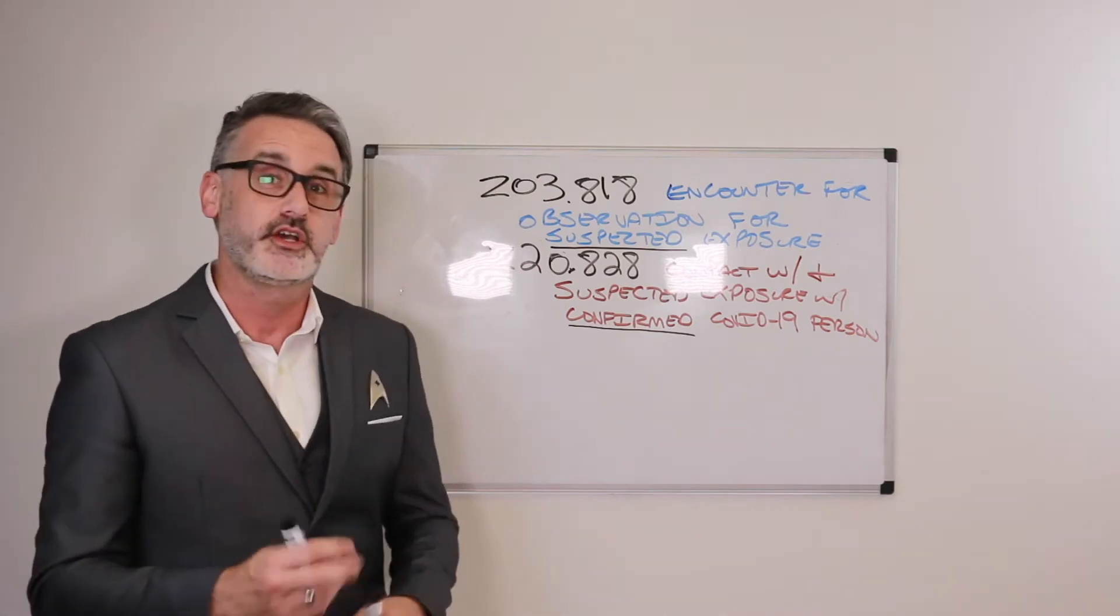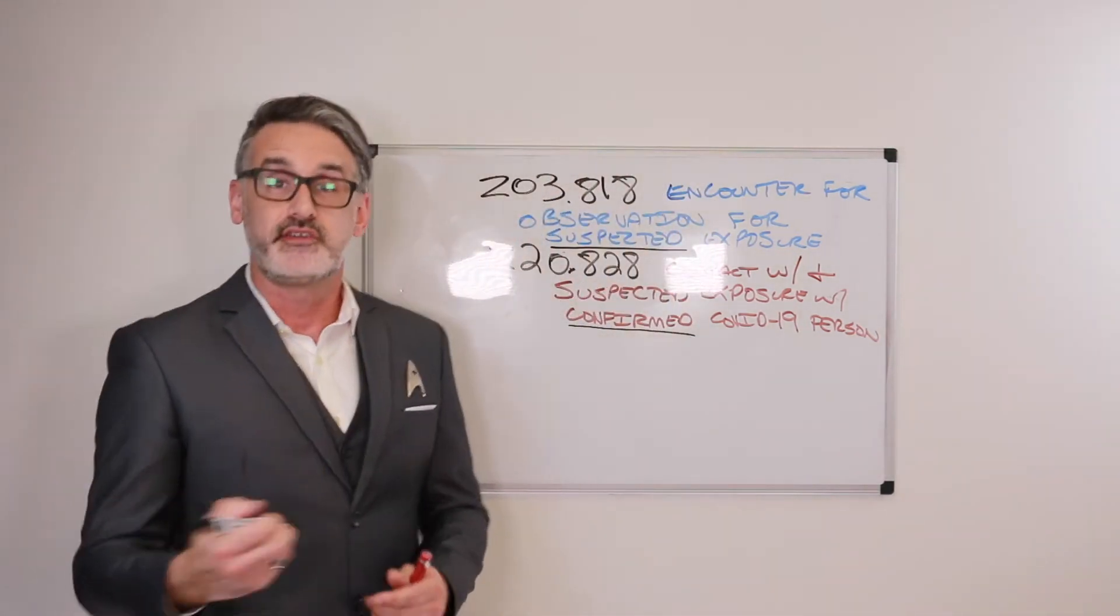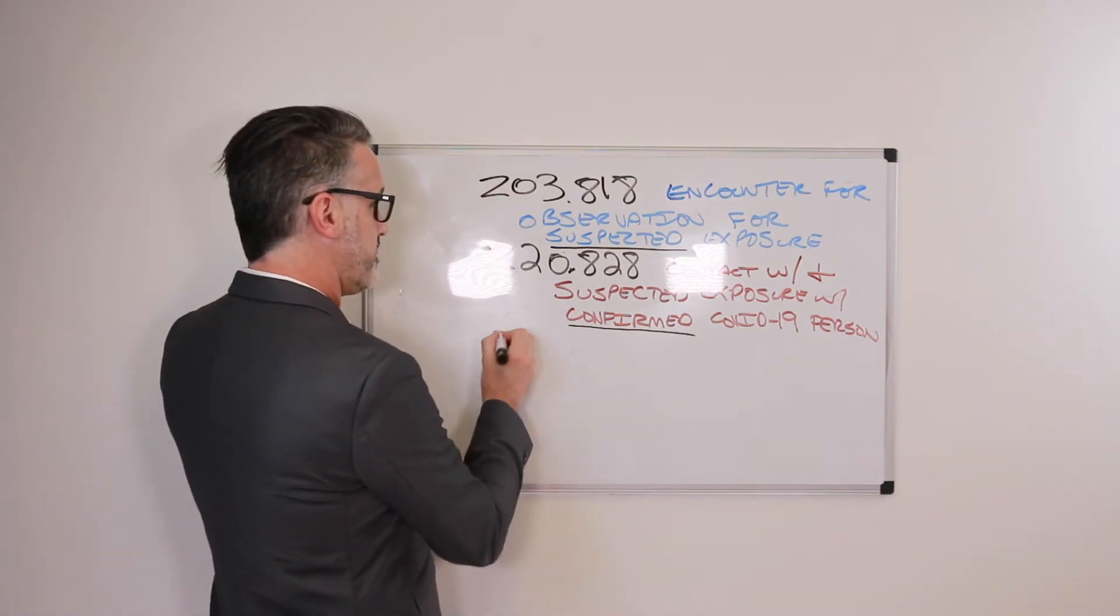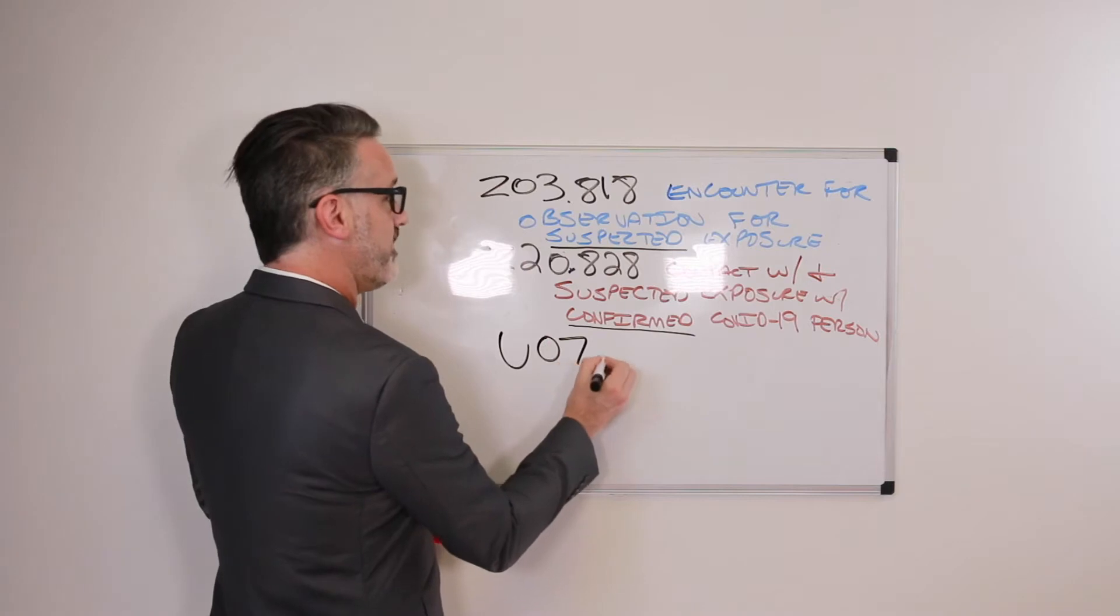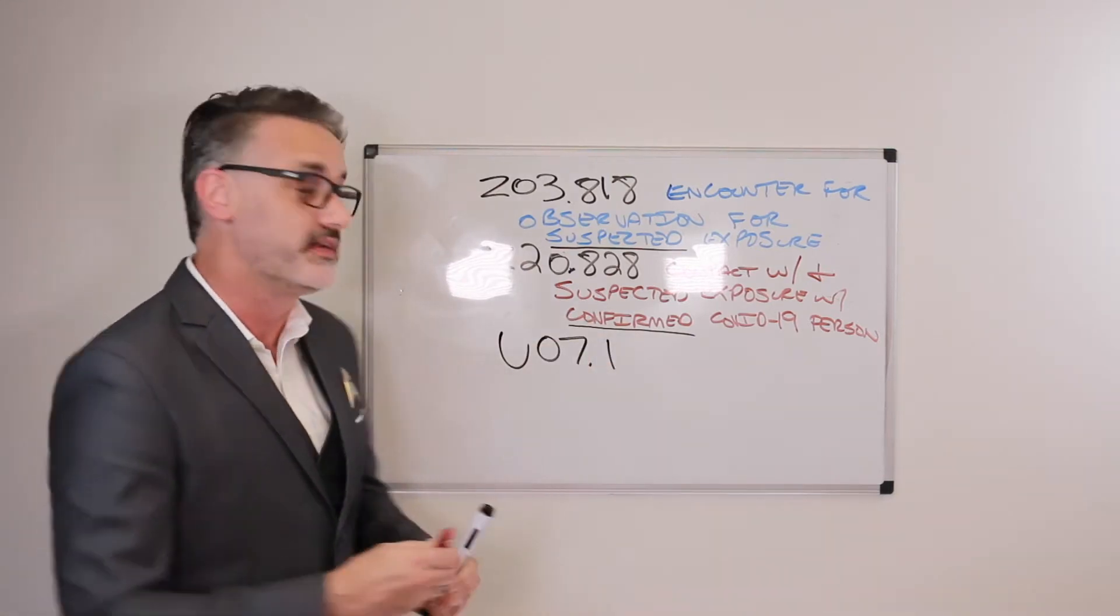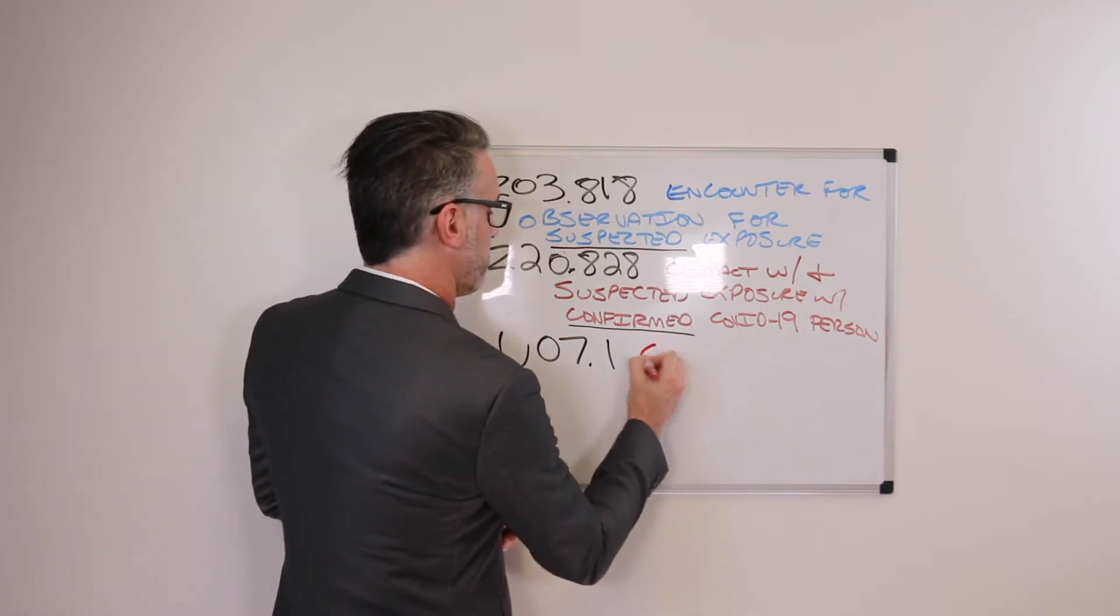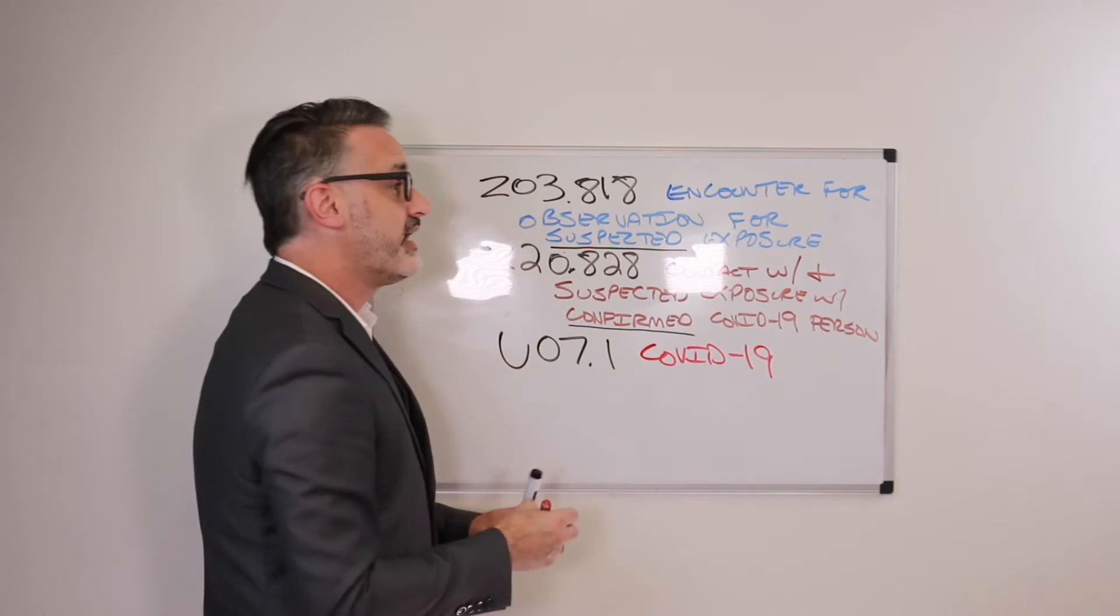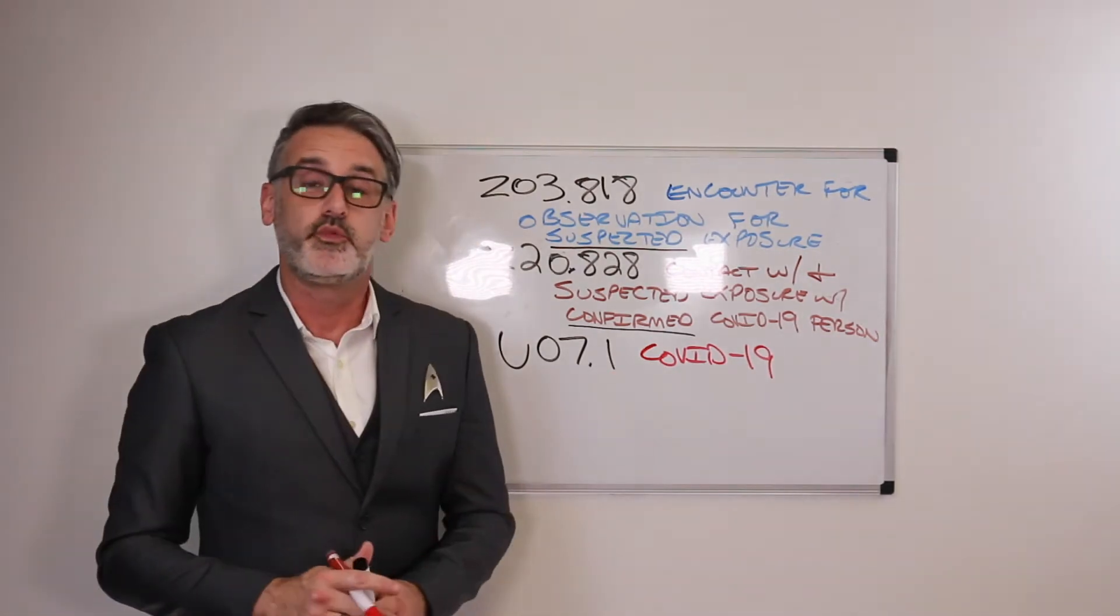Now, after the COVID-19 testing has been completed and the results come back positive, then we have the U07.1 code, and that would be for positive COVID-19 results.